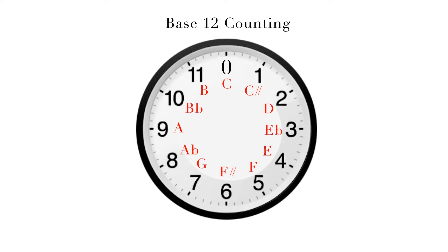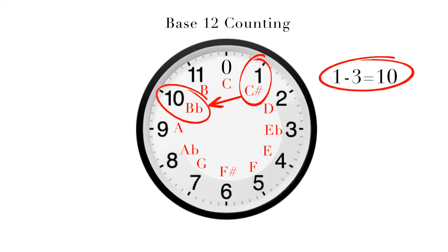In the same way with our integer naming, we can determine that if we start on a D-flat, which is a 1, and go down three half steps, we end up on a B-flat, which is a 10.